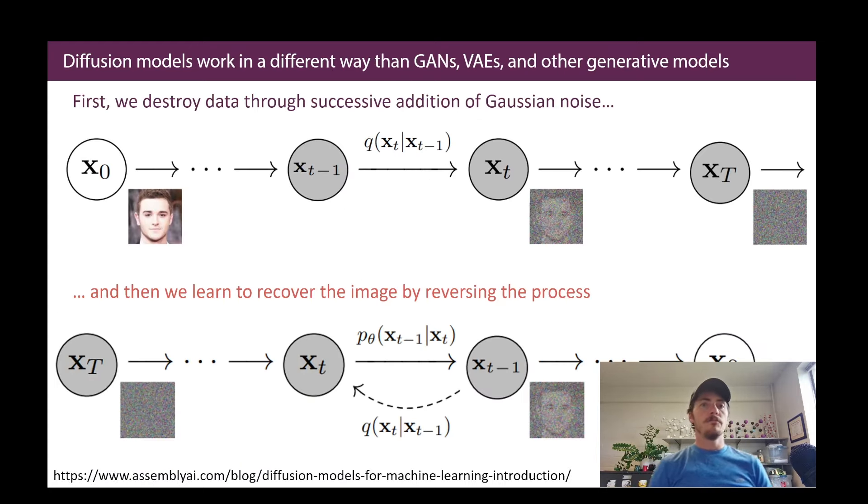So first off, diffusion models work in a totally different way from GANs and VAEs. They're kind of similar to VAEs in that there's this idea that you have real images and then we're compressing it to a latent space. And then we're figuring out how to go back to the real image. But we are now going to do something different. We're going to learn how to iteratively destroy our model by adding Gaussian noise.